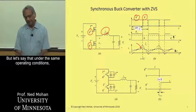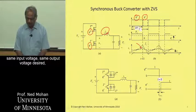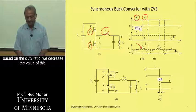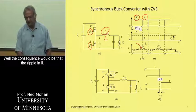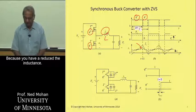But let's say that under the same operating conditions, same input voltage, same output voltage desired based on the duty ratio, we decrease the value of this inductance L over here. Well, the consequence would be that the ripple in IL would increase, because you have reduced the inductance.